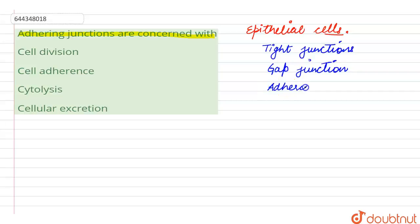The third type is the adhering junctions which is asked in the question. Adhering junctions are the cementing junctions that keep the neighboring cells together. Here we can mark our option number two as the right answer for this question. Adhering junctions have no role in cell division or the breakdown of the cell which is called cytolysis or cellular excretion.